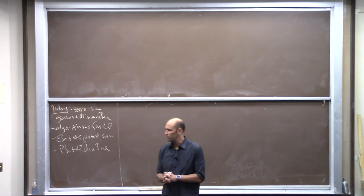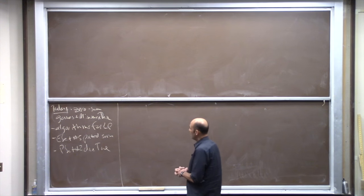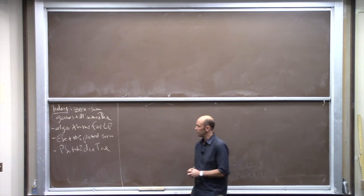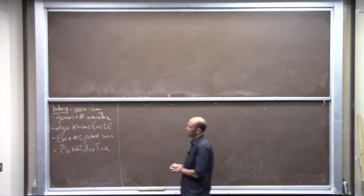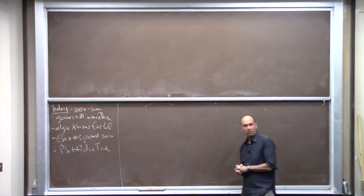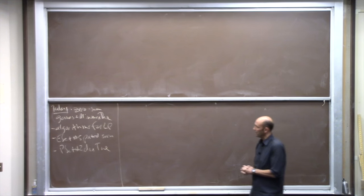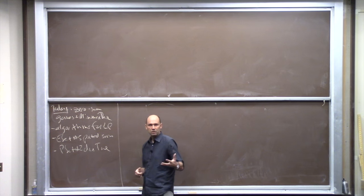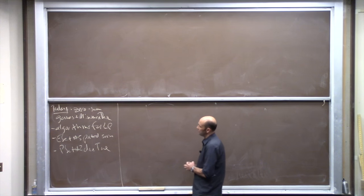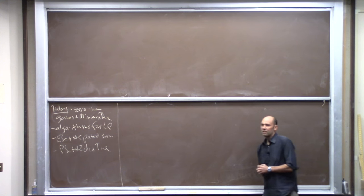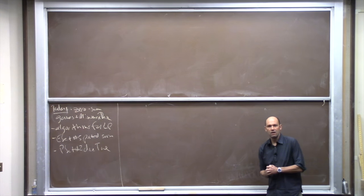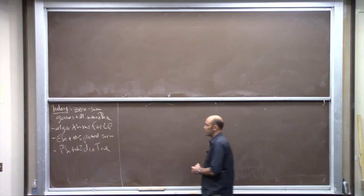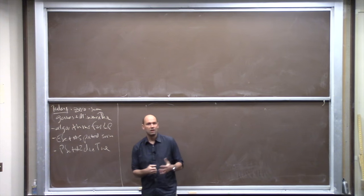Today we're going to cover two topics. First, an application of strong linear programming duality that we covered on Tuesday: I'm going to show you how a famous result in game theory called the Minimax theorem follows from strong LP duality. The Minimax theorem also has applications in computer science. The second topic is a survey of algorithms actually used for solving linear programming and a discussion of their efficiency.